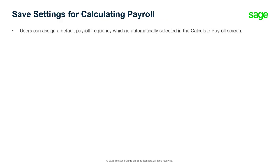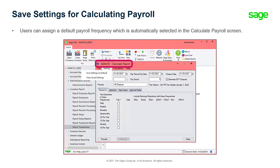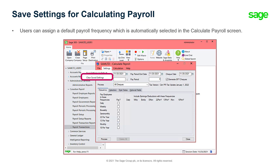On the Calculate Payroll screen, you can now save your settings so that they can be used by default the next time you open the screen. To save your settings, click Save Settings as Default on the Settings menu at the top of the Calculate Payroll screen. You can also clear your saved settings by clicking Clear Save Settings on the same menu.